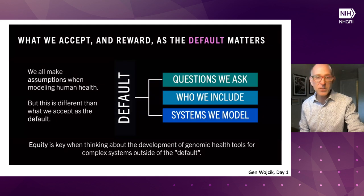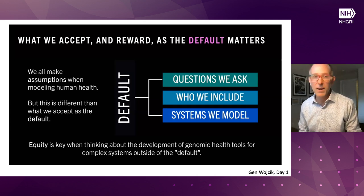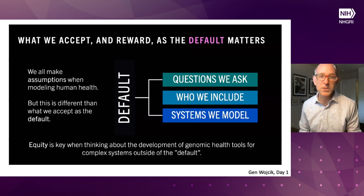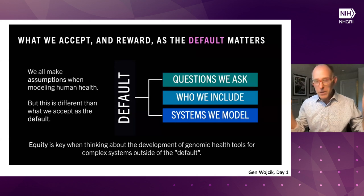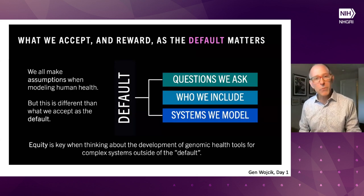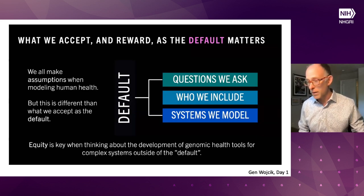I wanted to explicitly call out something mentioned yesterday: keeping in mind that how we define populations, and even the scientific questions that we're asking, are historically contingent and based on our positionality. So we should always think hard about why we are asking this question and about whom. Partly that's just good scientific practice — for example, why am I stratifying my population into genetically homogeneous groups to control for population stratification? Is it really going to achieve that end? But also, being aware that the scientific questions we're asking may not be the most relevant or appropriate for the folks we want to be studying and who should be benefiting from scientific research.